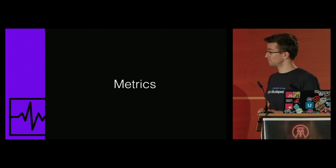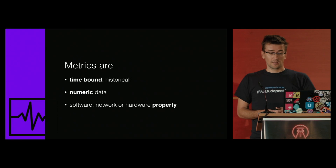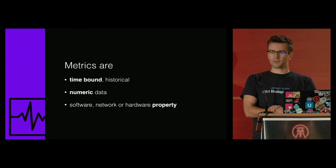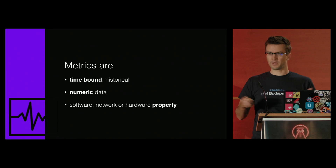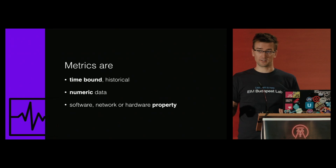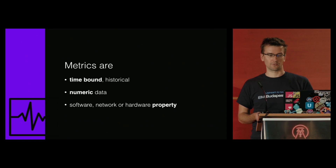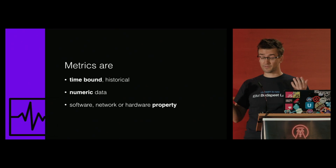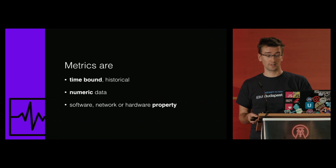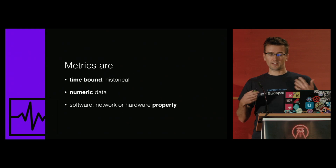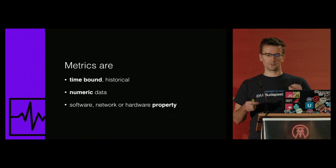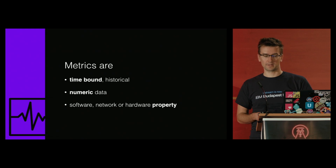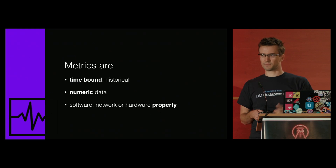Let's start with the great topic: metrics. Metrics are a time-bound, numeric representation of a software, hardware or network property. It can be anything, like users currently using your application, memory consumption, network lag, or even software complexity — all can be represented as a number. As they are related to time, historical data and metrics can show the back story of your application development. So I recommend that you start collecting metrics as early as possible.